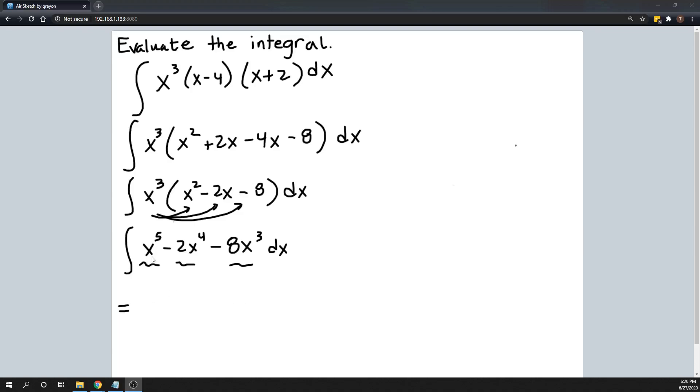So looking at this first term here, I have x to the fifth. That is just a power function. So by the power rule, I can integrate that. The power rule says add 1 to the power to get the new power. So 5 plus 1 is 6, and then either divide by 6 or multiply by 1 over 6. So I'm just going to multiply by 1 over 6.